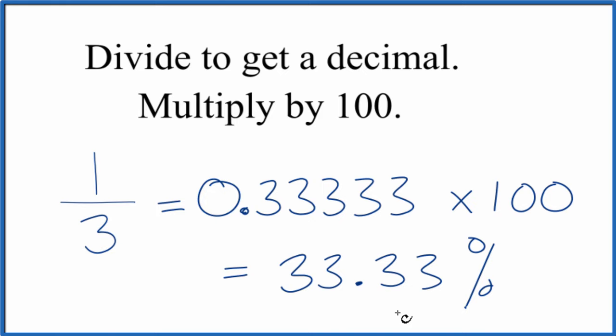33.33%. So the fraction one-third, that's 33.33%. One is 33.33% of three.